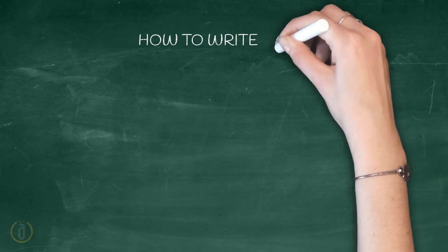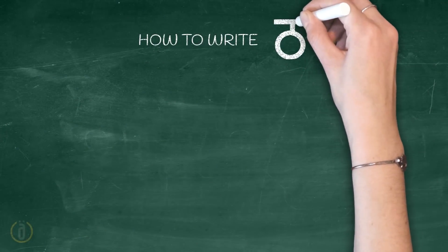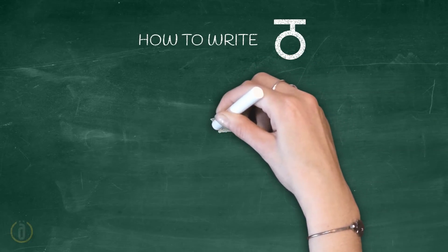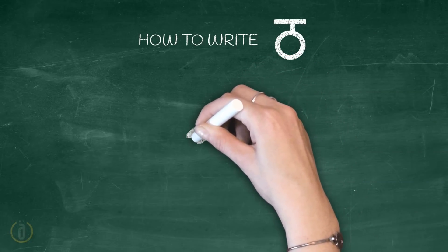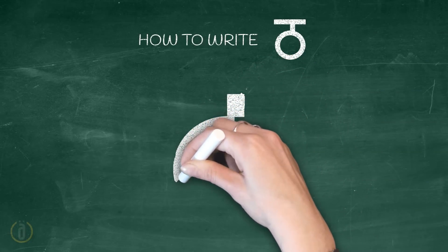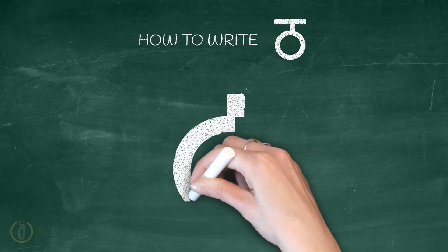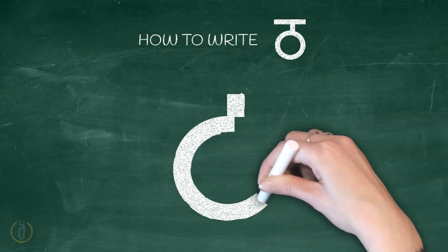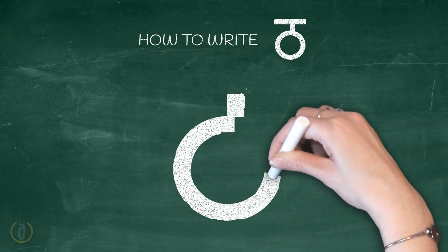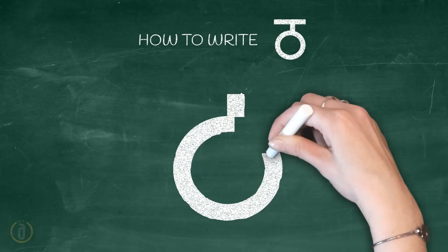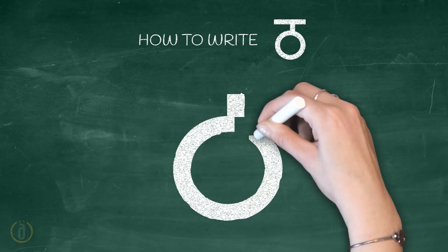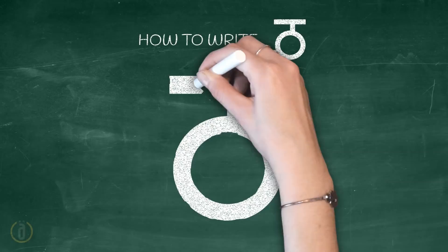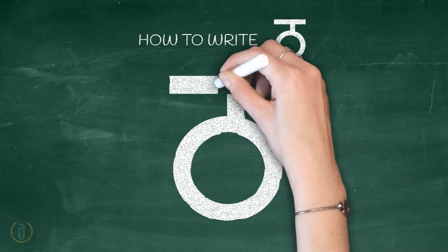How to write Tha: begin with a small standing line, and connected to that draw a circle, and finally draw a sleeping line on the top.